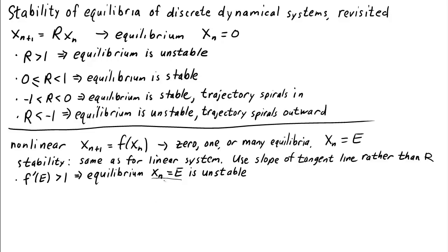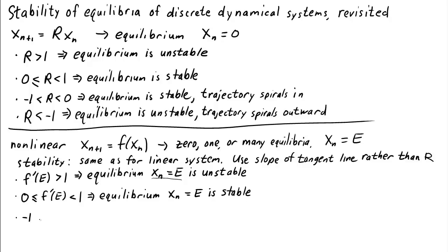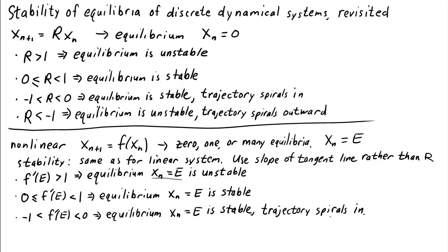Translating the linear conclusions: if f'(e) is greater than 1, the equilibrium is unstable. This applies to the specific equilibrium xn equals e, since f'(e) is the slope of the tangent line evaluated around that equilibrium. If we have multiple equilibria, we need to test the derivative at each one. If the derivative is between 0 and 1, just as in the linear case, the equilibrium is stable. If the slope is negative but greater than negative 1, we get spiraling behavior and the equilibrium is still stable. If the derivative is less than negative 1, the equilibrium is unstable.